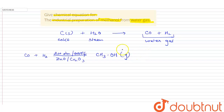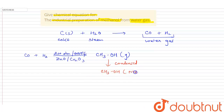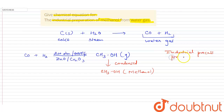These vapors are then condensed to form methyl alcohol. This is the industrial process which is used for methanol production.